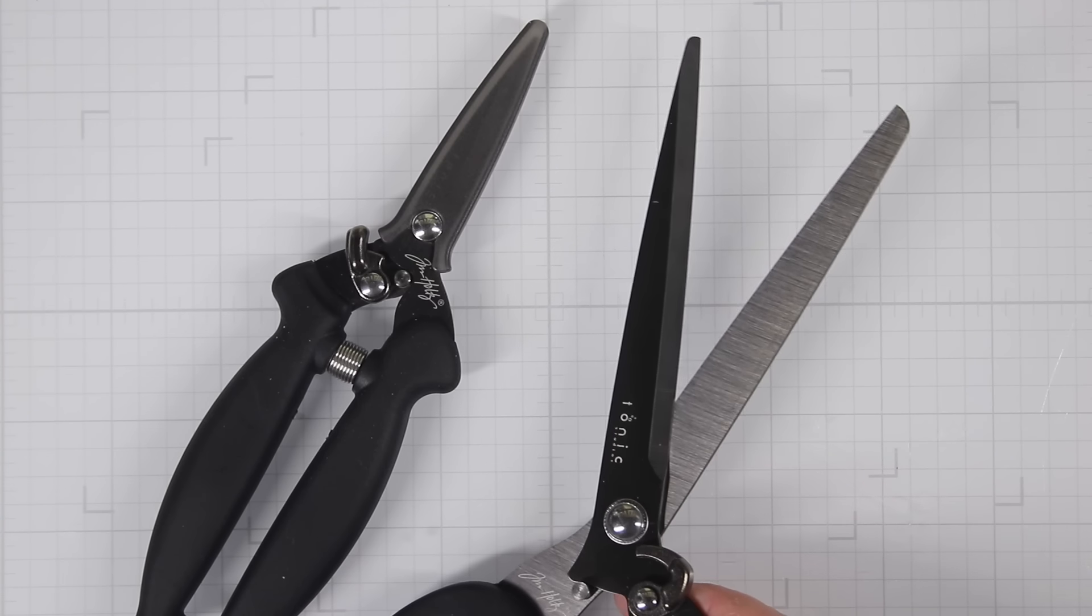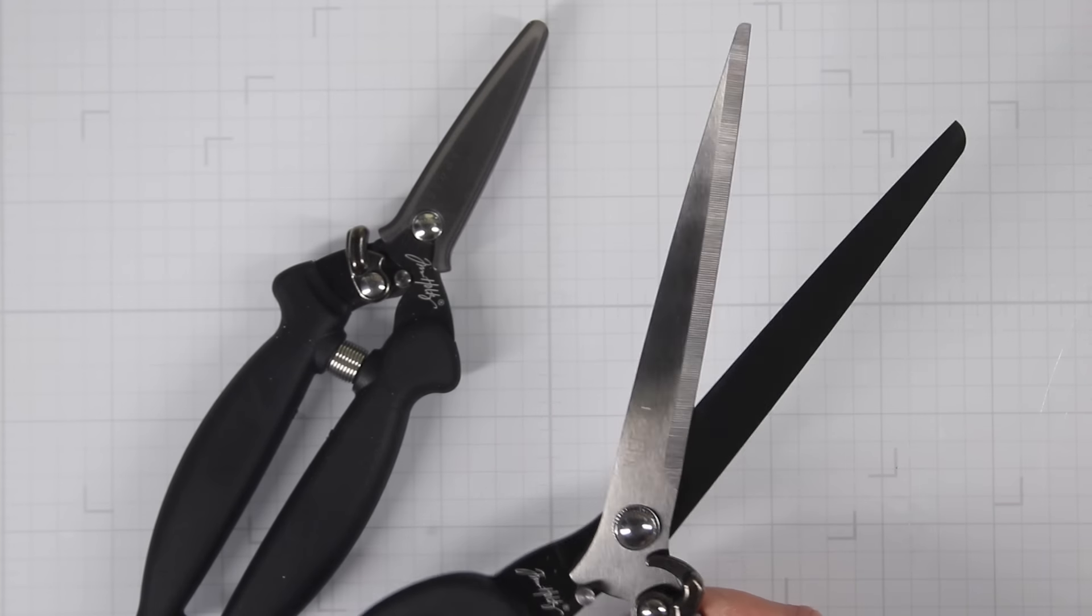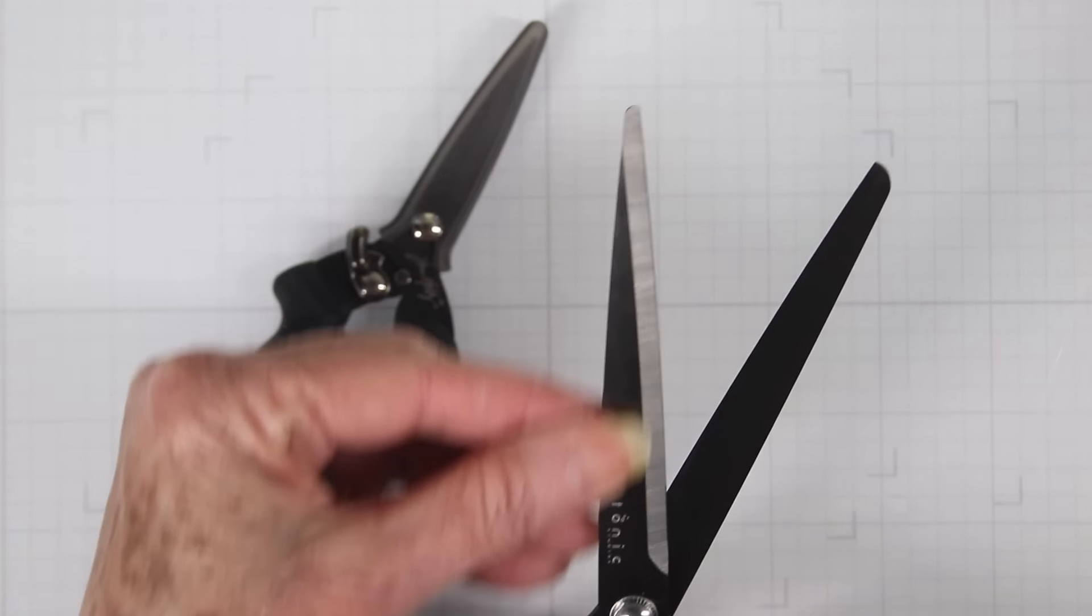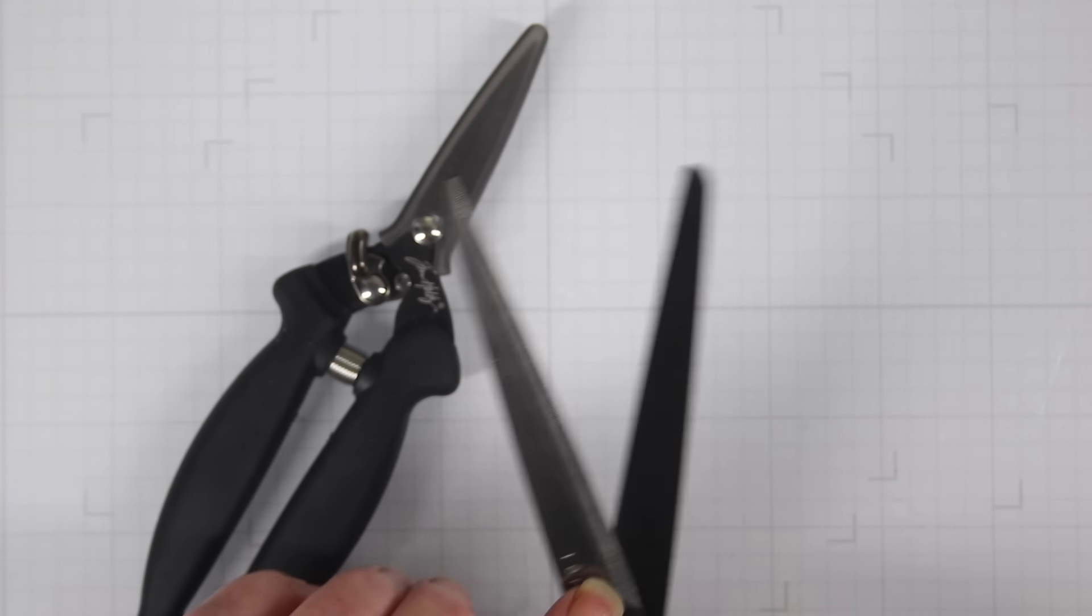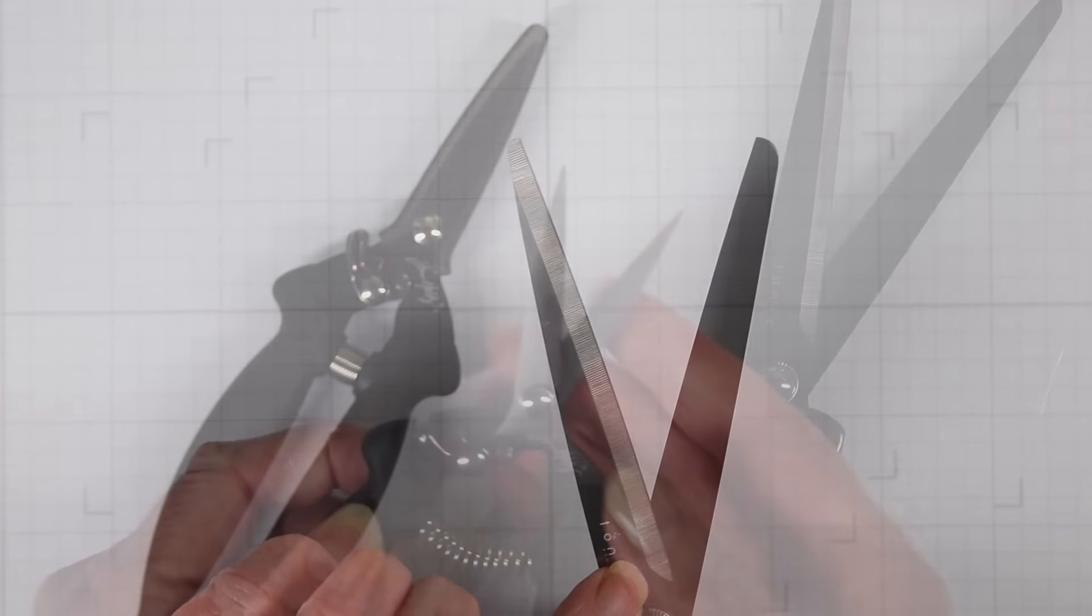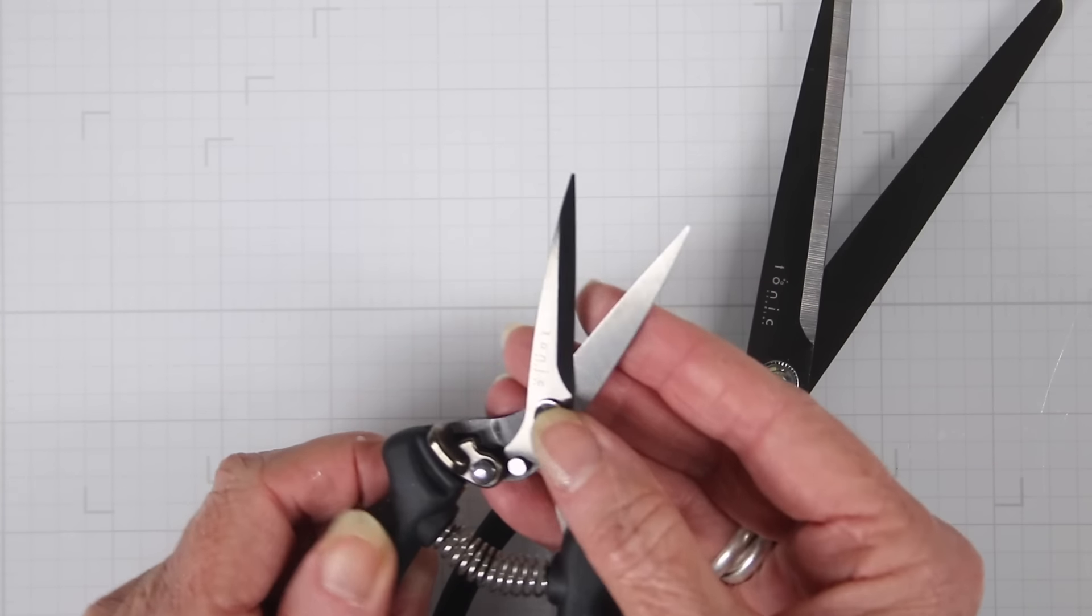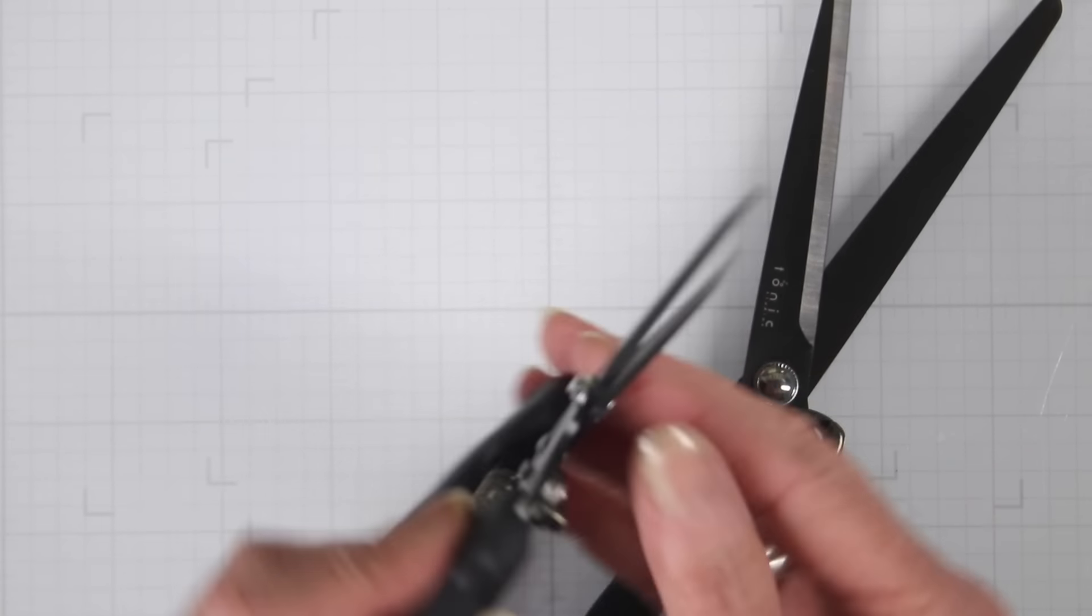Next, I want to talk to you about the blades. These are titanium blades, so they won't stick to any of your adhesives. And they have a deep bevel for additional sharpness. This feature is also found on your mini snips.